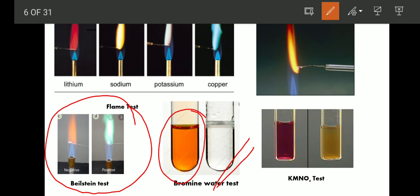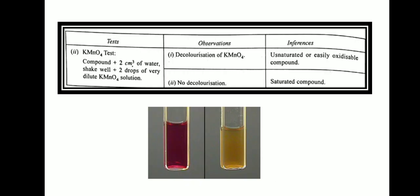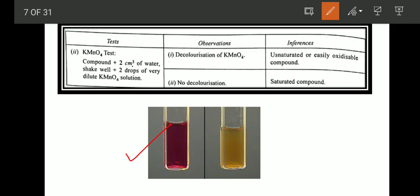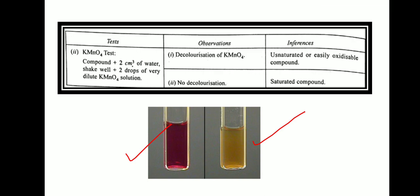One more test to detect unsaturation is the KMnO4 test. KMnO4 is a purple-colored solution. To perform this test, take the compound in a test tube, add 2 ml of water, shake it well, and add 2 drops of dilute KMnO4. If the color of the KMnO4 decolorizes, it means an unsaturated compound is present. If no decolorization occurs, this indicates a saturated compound. In the second test tube shown, the color of KMnO4 decolorizes, meaning the compound is unsaturated.